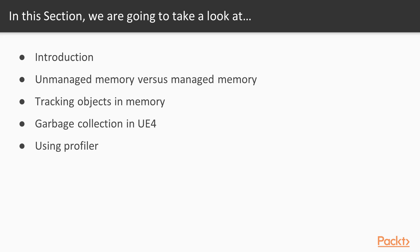We'll also see how Unreal Engine keeps track of objects and how you can create and use shared or smart pointers that will track memory for you. And finally, we'll look at garbage collection in Unreal Engine 4 and how you can utilize it by using the UPROPERTY macro. Whenever you have memory locations that you don't want to manage yourself, you can tag them with UPROPERTY and make the UE4 engine perform the allocation and deallocation for you.